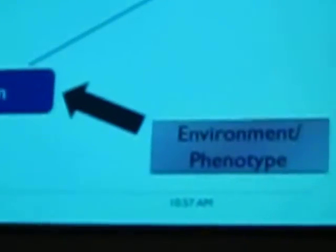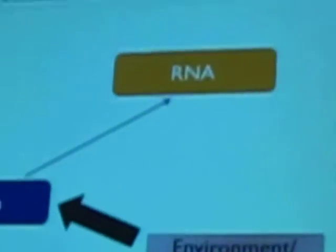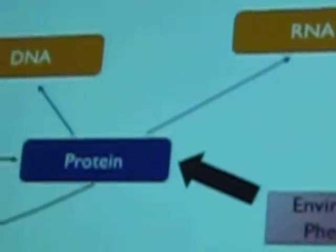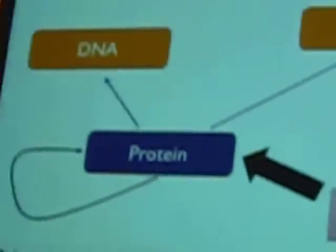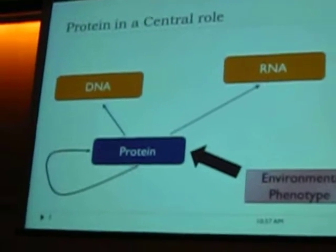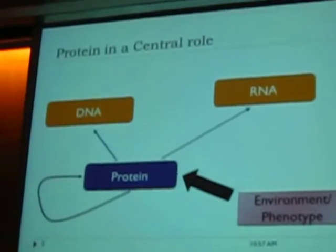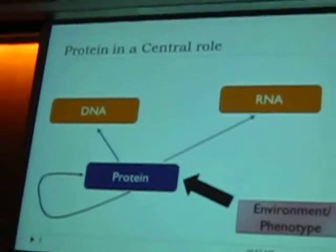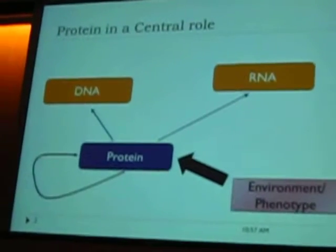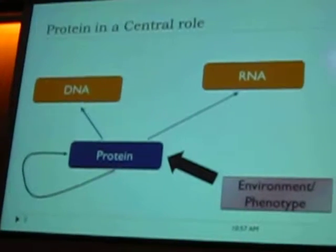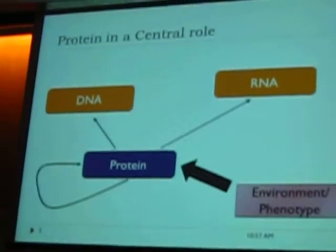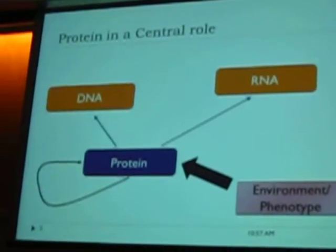Let's start with protein. Protein plays an essential role in the cellular machinery — it affects DNA, DNA replication, repair, everything. It affects RNA, RNA splicing, transportation, and protein gets affected by environment and phenotypes. So, protein is an important part of the cellular machinery.